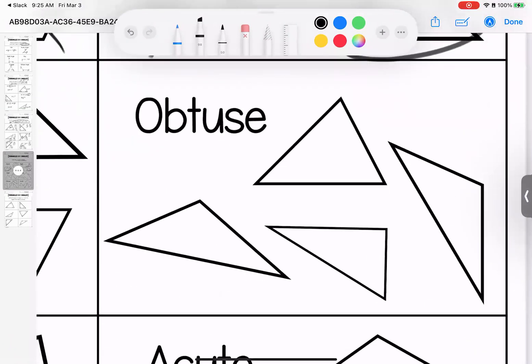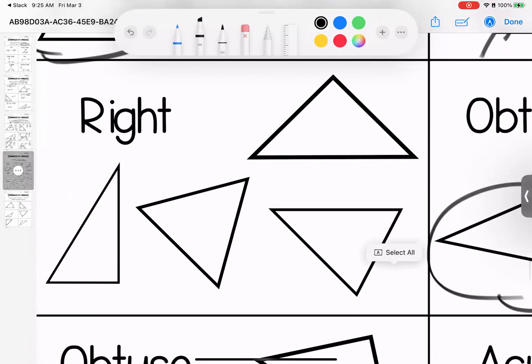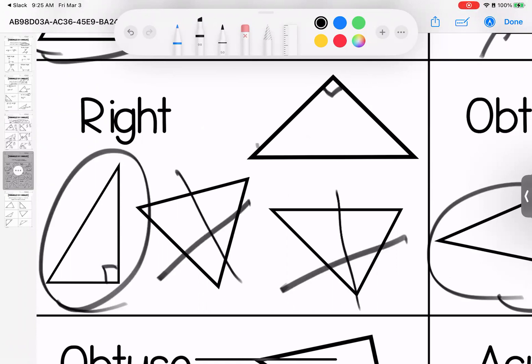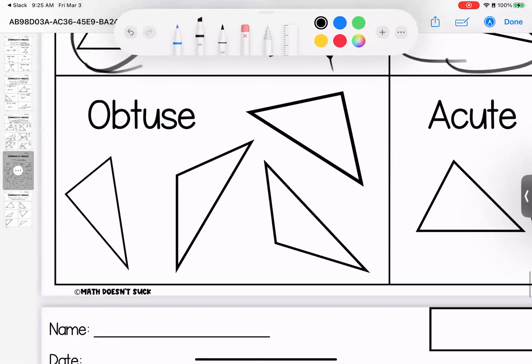I'm looking for obtuse. This is right. These are acute. These two triangles are obtuse. I'm looking for right. I see acute. I see acute. These two meet my rules.